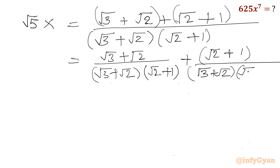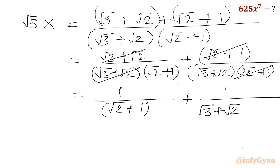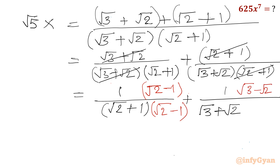We can cancel the (root 2 plus 1) brackets in both numerator and denominator. So what is left in the numerator is 1 plus something, and in the denominator it is root 3 plus root 2. Now I will use rationalization with respect to the denominator. I will multiply by (root 2 minus 1) and also by (root 3 minus root 2) in both numerator and denominator.